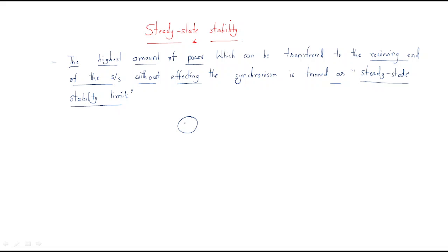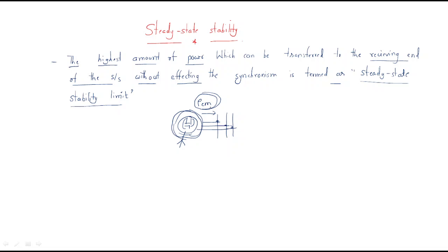For example, we have an alternator that generates power and this power is given to the grid — this is the electromagnetic power. If it gets some fault, the synchronism should be maintained. That means the sending of power does not stop; the power will continue to be supplied. This is called the steady state stability limit.